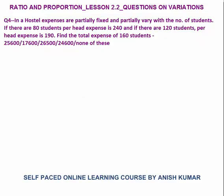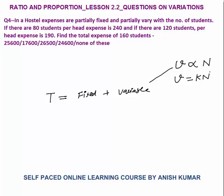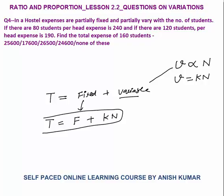Question 4: in a hostel, expenses are partially fixed and partially vary with the number of students. If there are 80 students, the per-head expense is Rs.240; if there are 120 students, the per-head expense is Rs.190. Find the total expense for 160 students. Total expense = fixed cost F + variable cost, where variable cost varies directly with number of students N. So total cost = F + K × N.